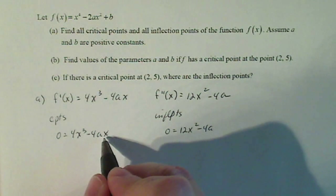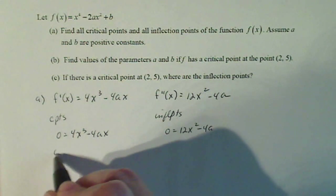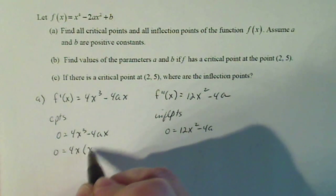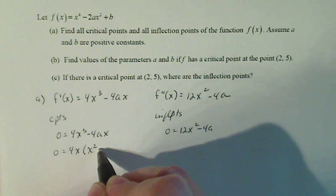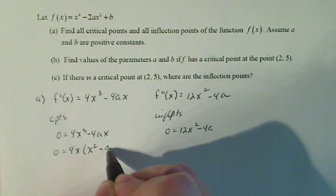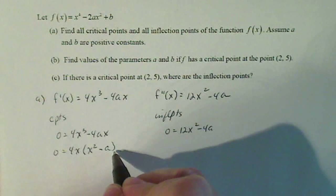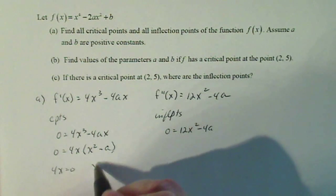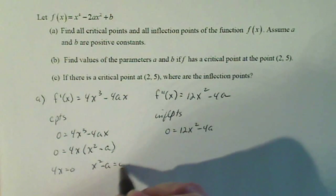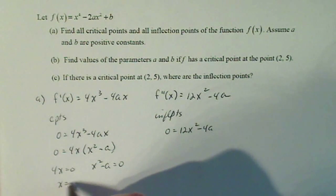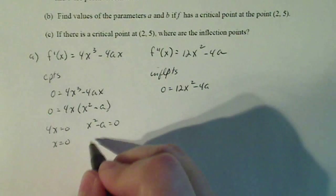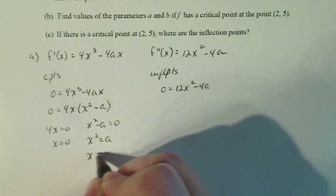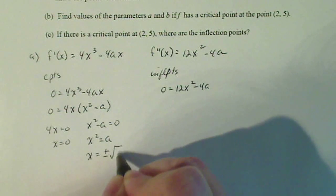So to solve this one first, I'm going to factor out a 4x out of both of these. So 4x times x squared is 4x cubed. 4x times a gives me 4ax. I know that 4x can equal zero, and x squared minus a can also equal zero. So one critical point is that x equals zero. Another critical point is where x squared is equal to a. x is equal to plus or minus the square root of a.